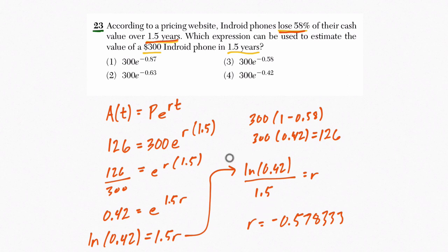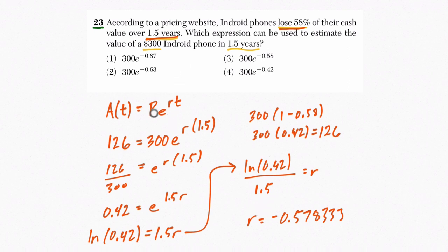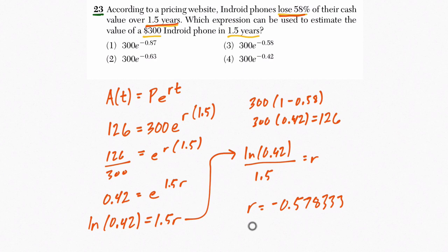So R equals negative 0.578333. Well, what are we doing here? Well, the idea is that they want to know which expression shows you what the phone will be worth in 1.5 years. So if you have an equation now, A of T equals 300 times E to the negative 0.578333 T. And if you plug in now, if you plug in 1.5 for T, you're going to get negative 0.578333 times 1.5. You get negative 0.87, this number here. Pretty close to it. Not exact, but close. And that's going to be our answer.